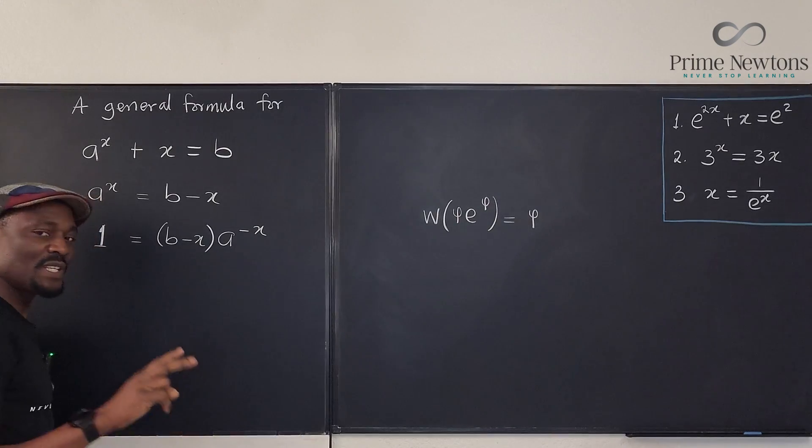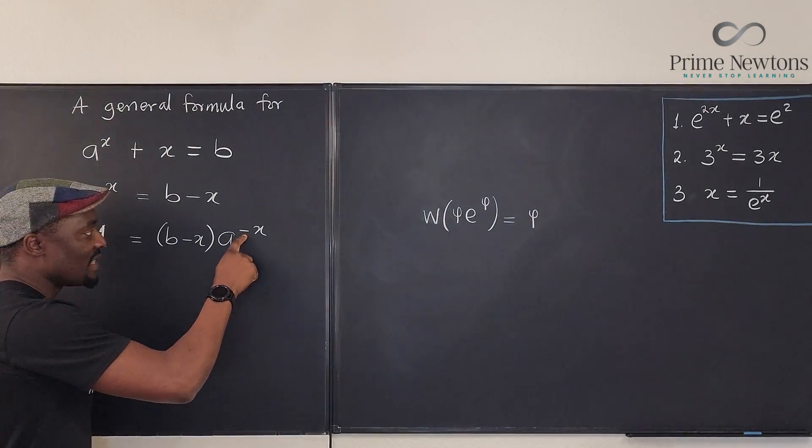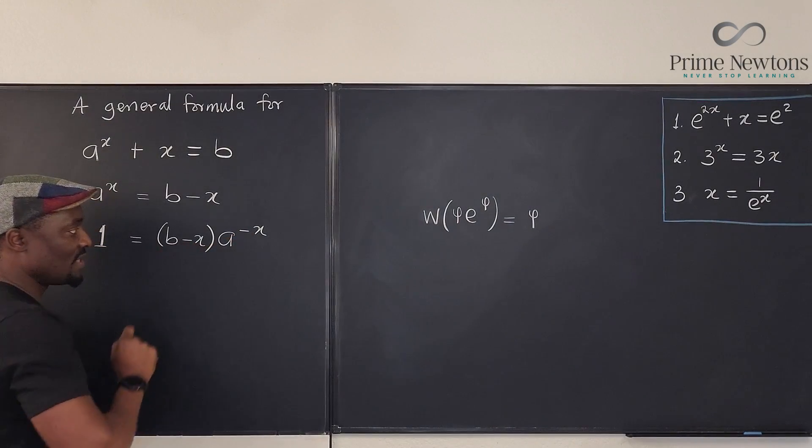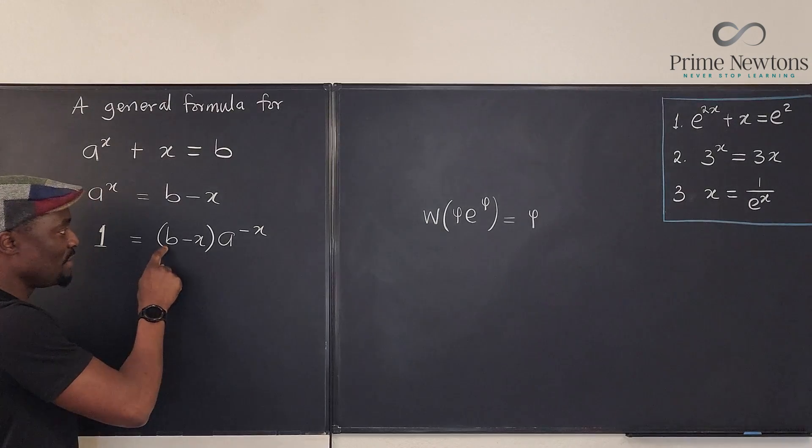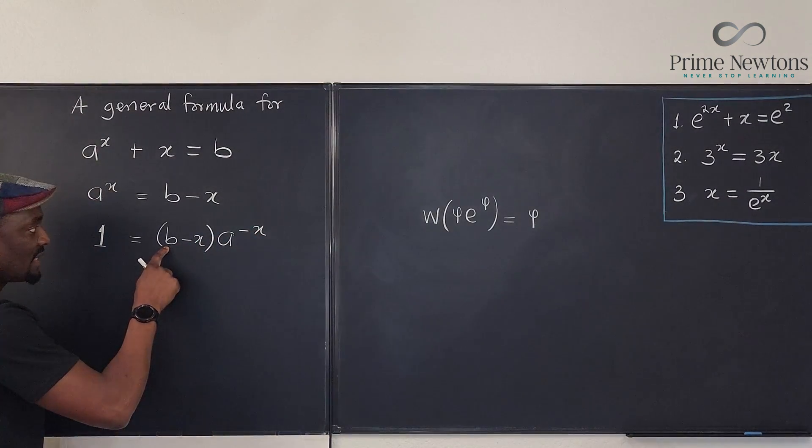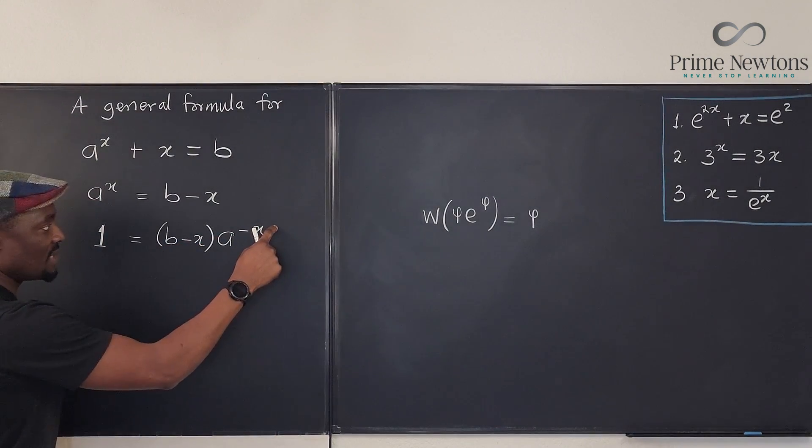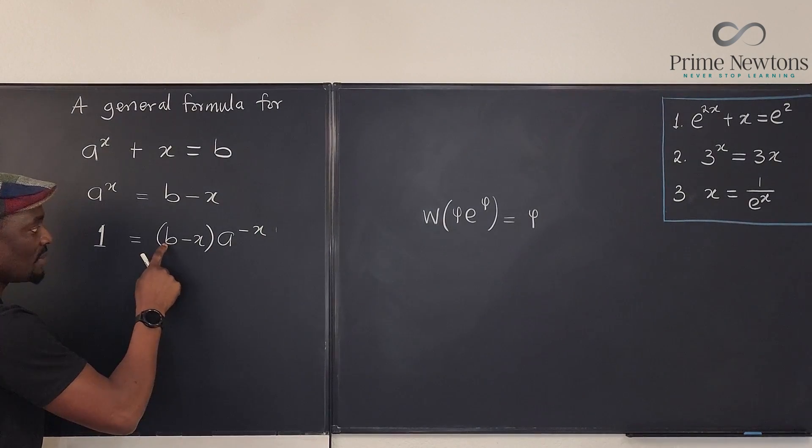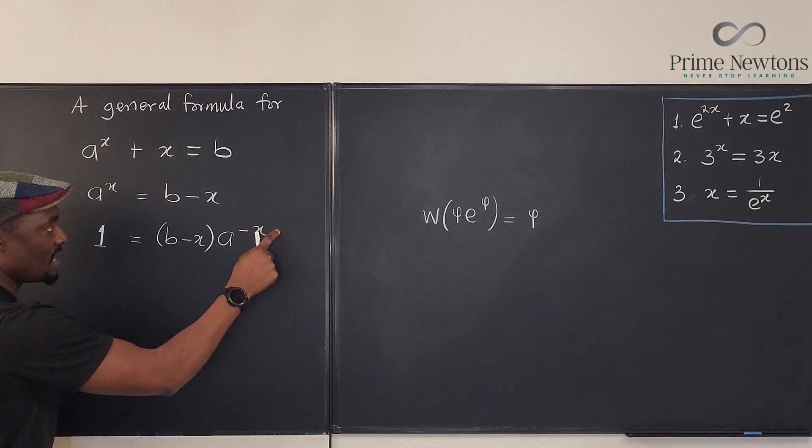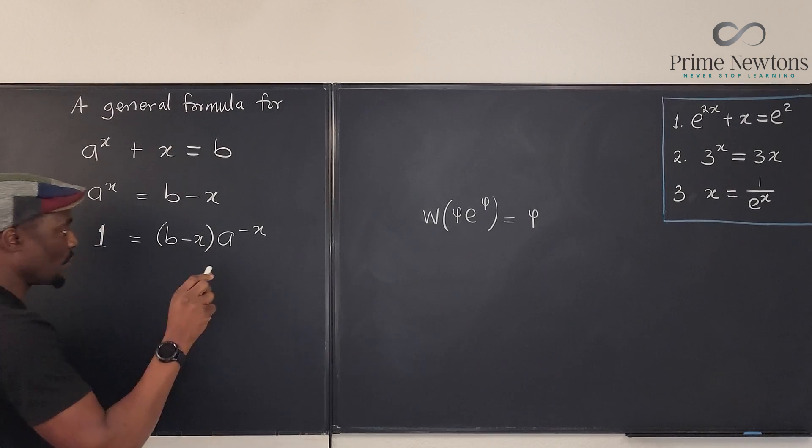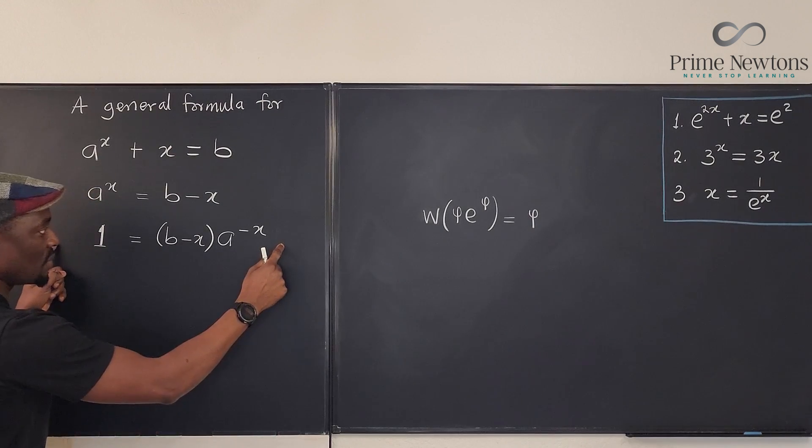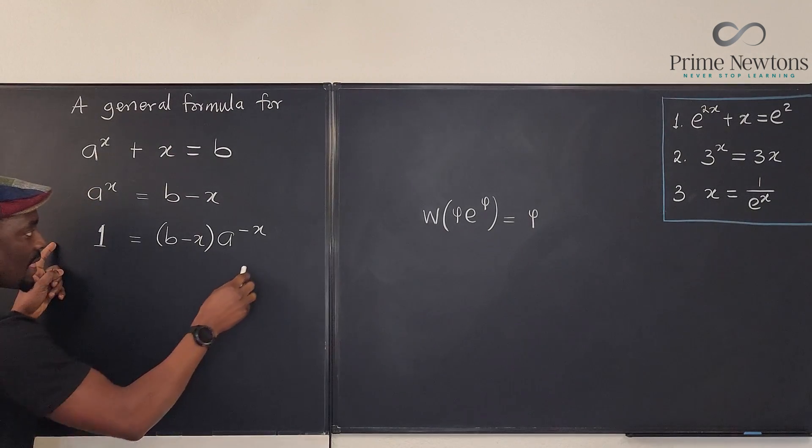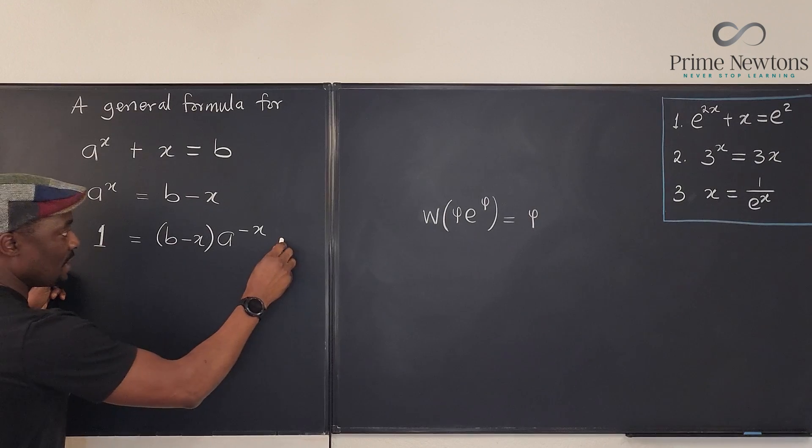So one good thing that we see is that this and this are the same. But I need this b to be up here. I want this and this to be the same. So I need to put a plus b here so that this would be b minus x and this would be b minus x also. So what I need to do is multiply both sides by a to the b.